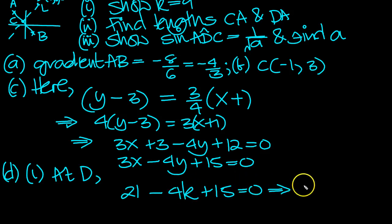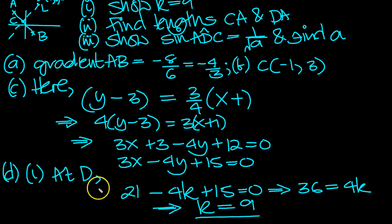So x is 7, so we get 21 - 4k + 15 = 0. That tells us, move the 4k over, we've got 21 + 15 is 36 equals 4k. So that tells us 36 over 4 is 9. So D has coordinates (7, 9). So I'll just list them here. So there's D.